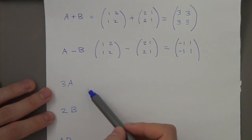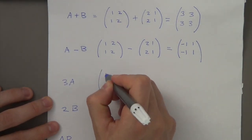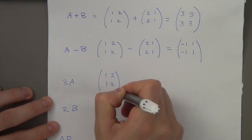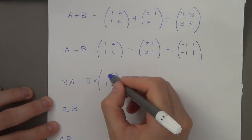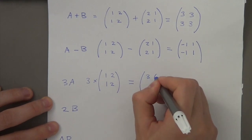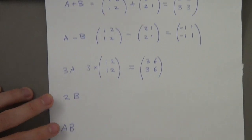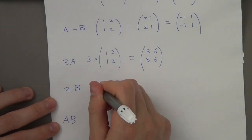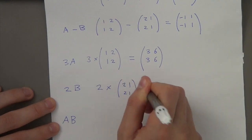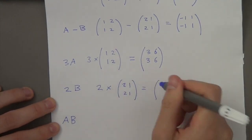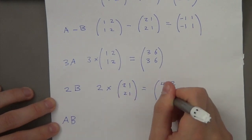So what happens if I have to multiply it by a number? So A is this, and it's times by 3. Basically I times 3 to each number, so it becomes 3, 6, 3, 6 — that's my answer. Same thing for B: 2 times B, with entries 2, 1, 2, 1, so it becomes 4, 2, and so on.